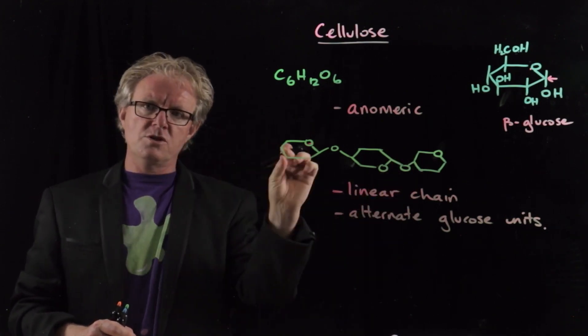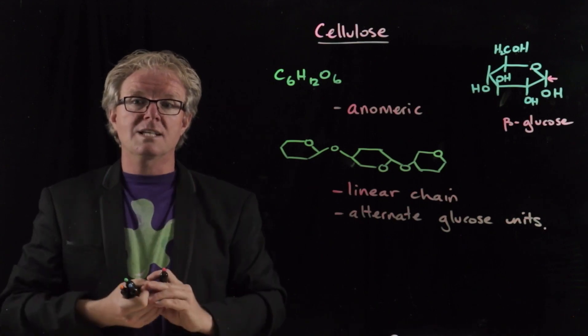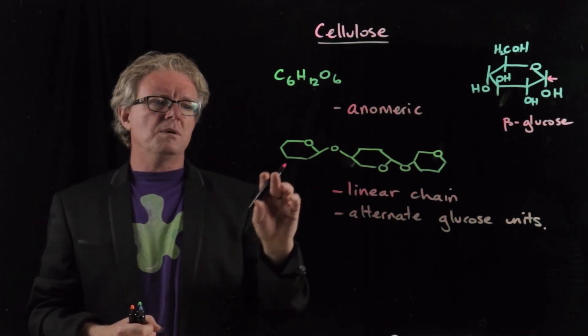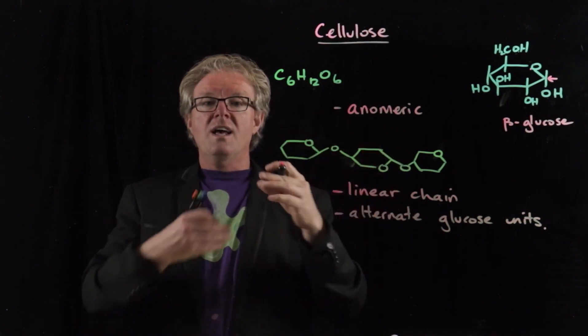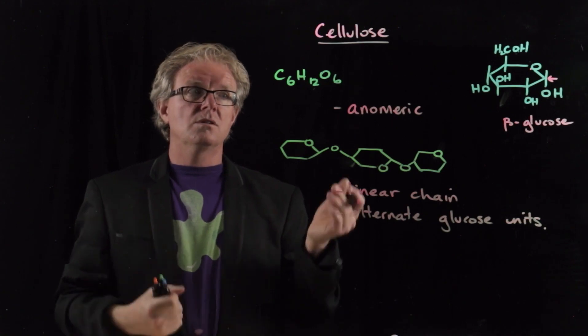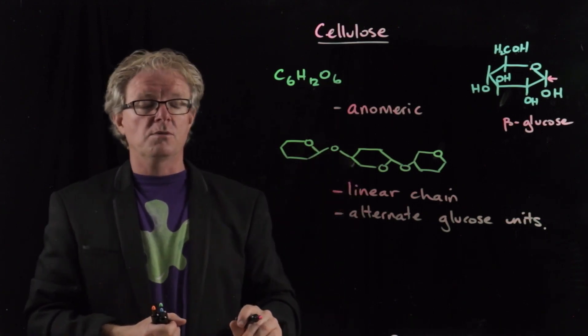The cellulose polymers are very straight. They can pack really close together, which means they're very strong and rigid. It also means that the hydroxide groups are not extending outwards so they can bond with water. As a result, cellulose is not very soluble in water.